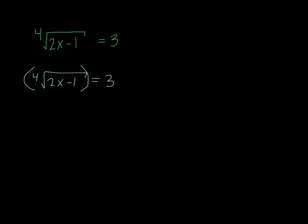So what I want to do is I want to take both sides to the 4th power. That eliminates the 4th root. So we end up with 2x minus 1 equals 3 to the 4th power, which is 81.